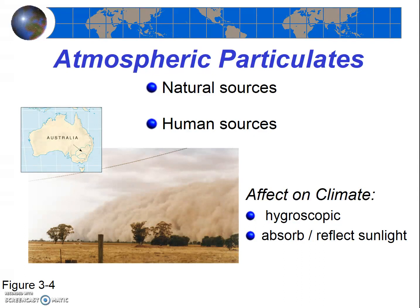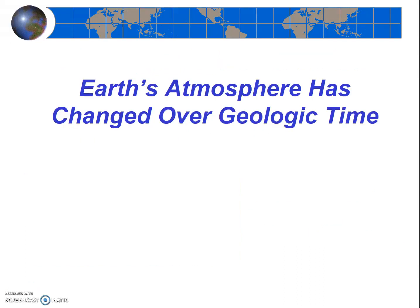You should be able to list several natural and several anthropogenic sources of particulates. Another important point about atmospheric composition is that the Earth's atmosphere has changed over time. Earth's early atmosphere was likely made of helium and hydrogen, and volcanic eruptions gradually modified it over time, adding carbon dioxide, water vapor, and small amounts of many other gases. Starting about 3.5 billion years ago, primitive lifeforms began using atmospheric CO2 and releasing oxygen (O2) as a byproduct through photosynthesis. The emission of large amounts of oxygen eventually led to a dramatic change in the Earth's atmosphere. Components of the Earth's system — like volcanoes, plants, and humans — have changed and continue to change the composition of our atmosphere.